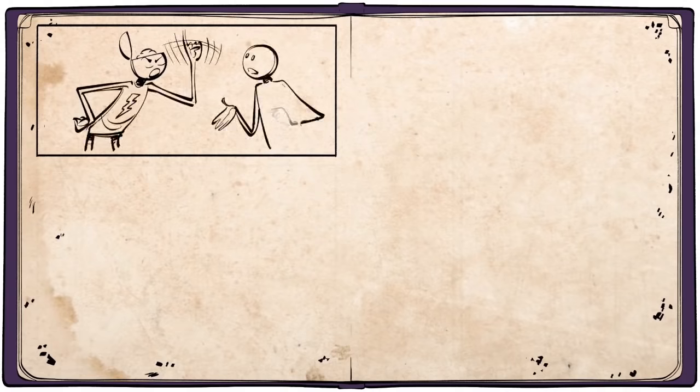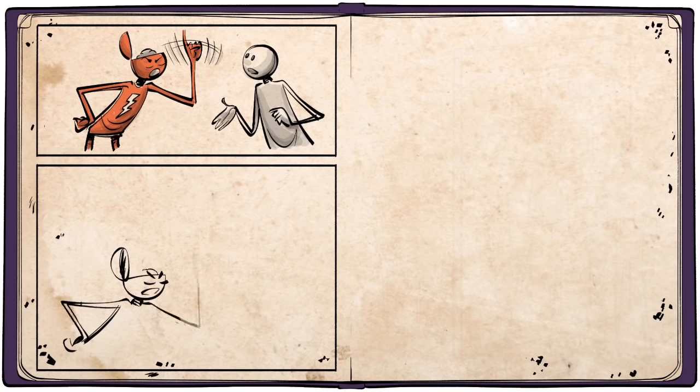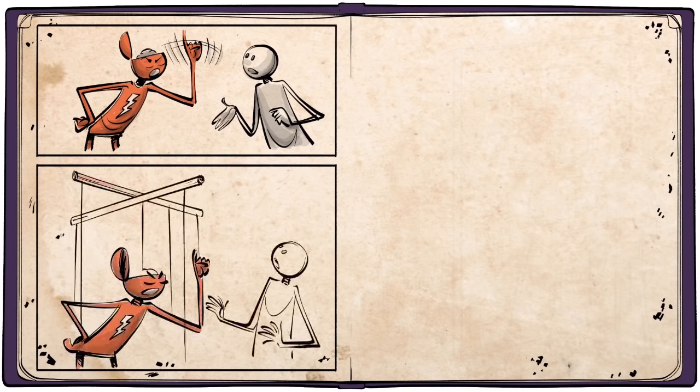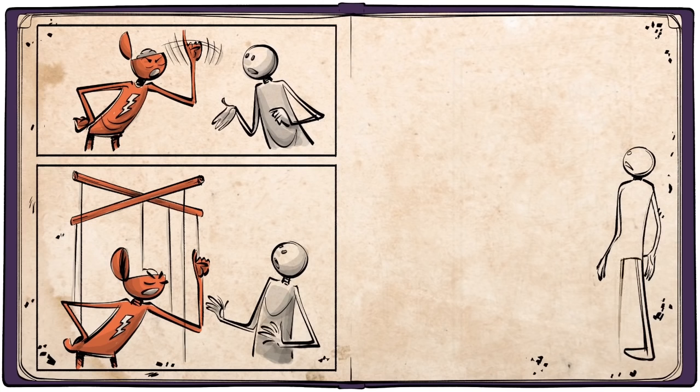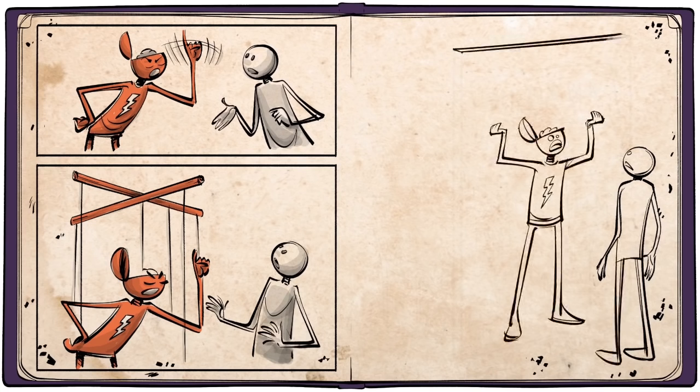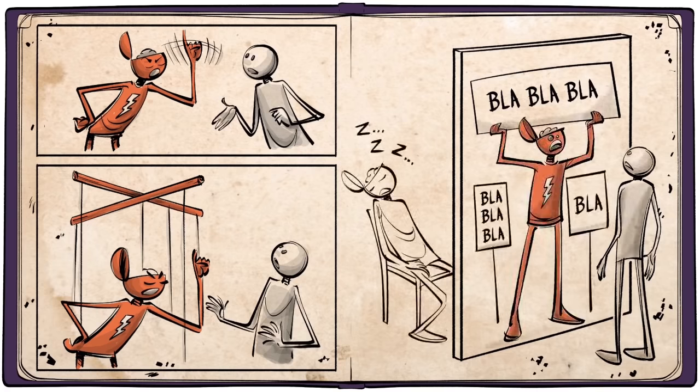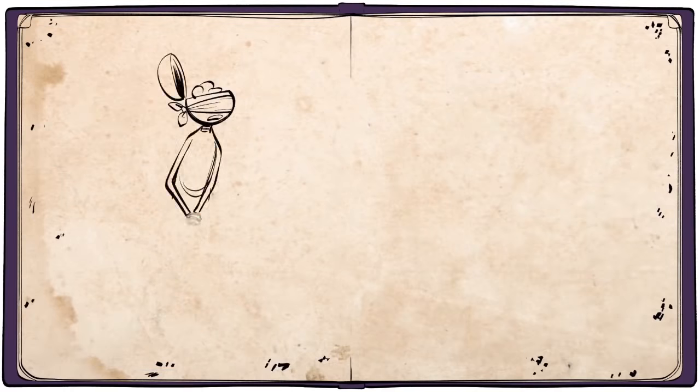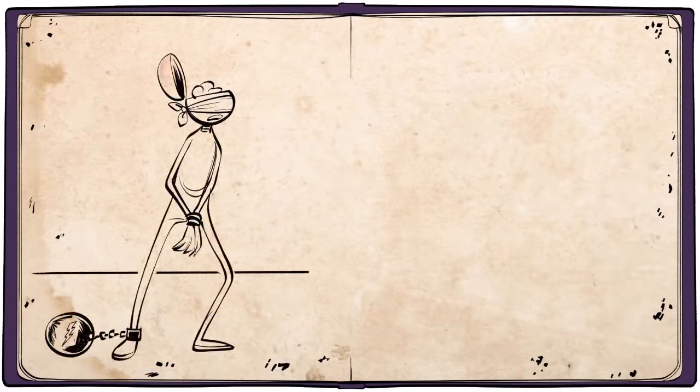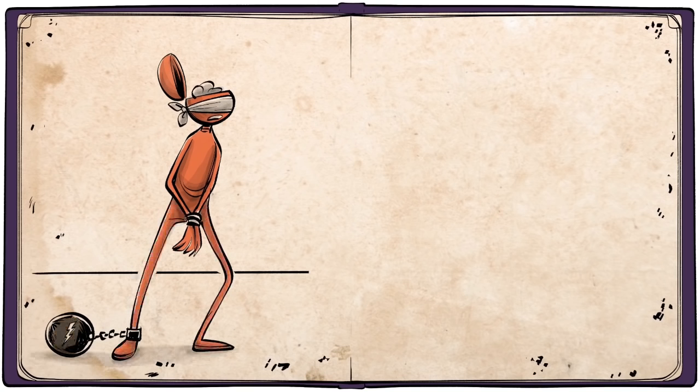The fact that the stupid person is often stubborn must not blind us from the fact that he is not independent. In conversation with him, one virtually feels that one is dealing not at all with him as a person, but with slogans, catchwords and the like, that have taken possession of him. He is under a spell, blinded, misused, and is abused in his very being.